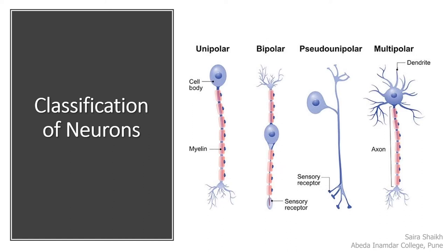The next type is pseudo-unipolar. 'Pseudo' means false. It appears as a false unipolar structure because in the beginning it gives just a single branch, and later that branch divides into a branching structure. The last type is multipolar neuron, in which the cell body gives many small branching structures called dendrites and a single long axis called the axon. Such cells are called multipolar as many branching structures are present.